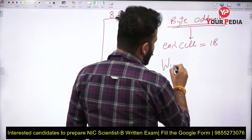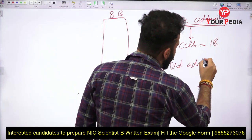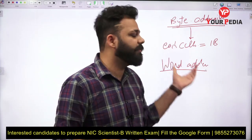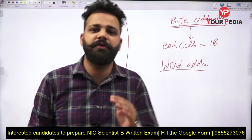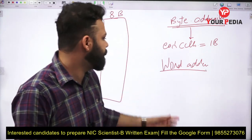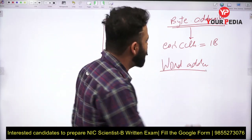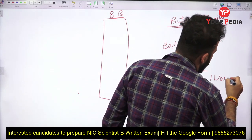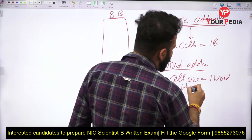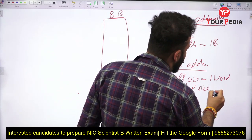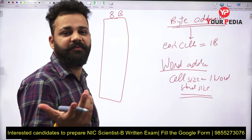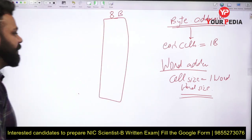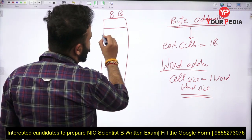The second type of memory is word addressable. It will be given whether the memory is byte addressable or word addressable. If nothing is given, consider it byte addressable. But if it is given as word addressable, this means cell size will be equal to one word, and you will be given the word size — whatever the word size is, that will be the size of one cell. Now let's say this memory is byte addressable.